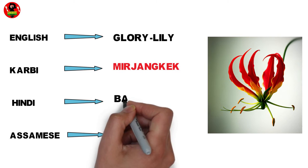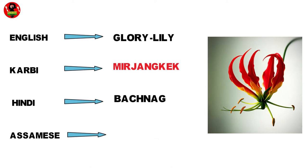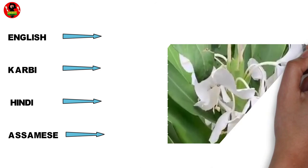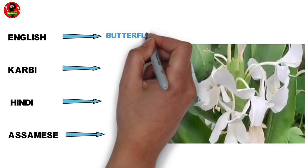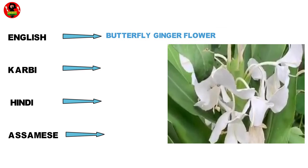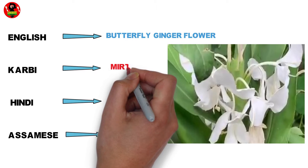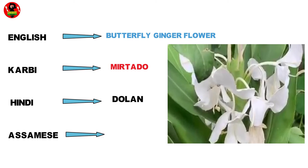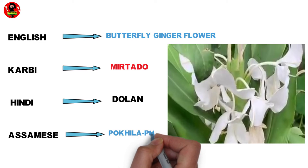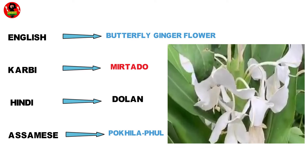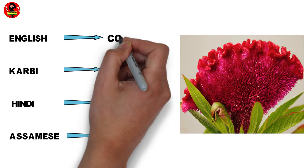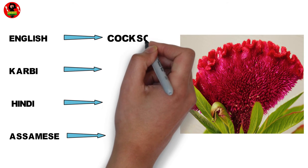Mirjamke, Batsnap, Ulatchandar, Butterfly Ginger Flower, Mirthado, Dulan, Pukkila Pool, Coxcomb.